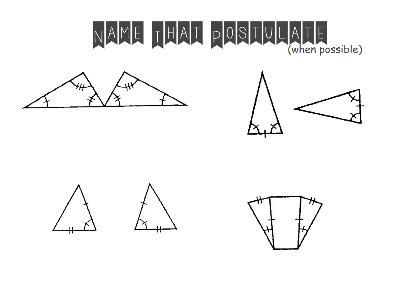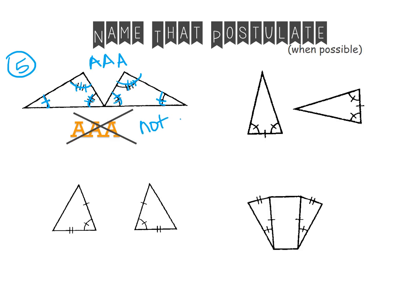Let's try this fifth example. Again, we notice we have a set of congruent angles, so we'll start by writing an A. I see another set of congruent angles, so I'll write another A. And I see a third set of congruent angles, so I'll write another A. So when I look in my notes at AAA, is AAA a postulate that proves two triangles congruent? It looks like it does not. So these two triangles would not be congruent.